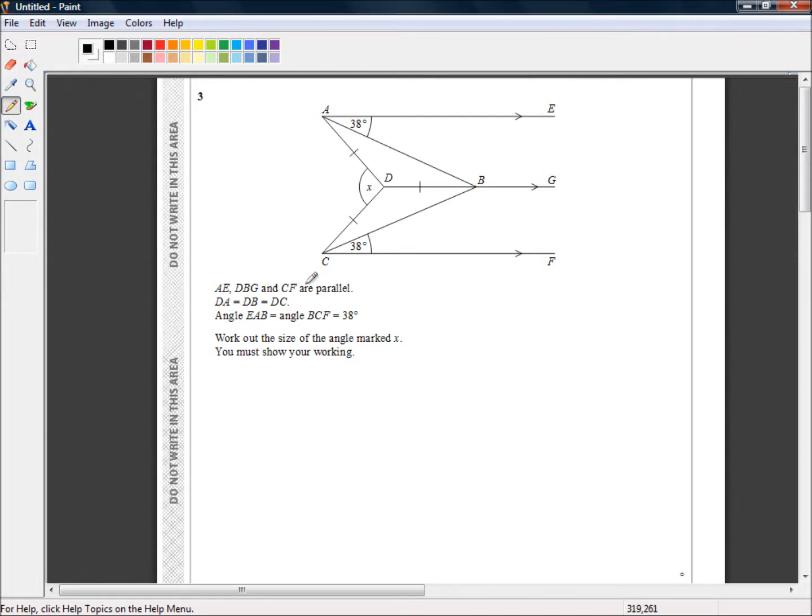AE, DBG and CF are parallel, so these lines here are parallel. DA equals DB equals DC, so these lines here are the same length. Angle EAB equals angle BCF equals 38 degrees. Work out the size of the angle marked X. You must show your working.